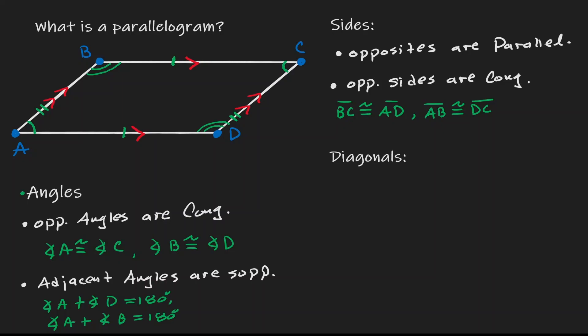Now let's take a look at the diagonals of this parallelogram. If we connect point A to point C, that is classified as a diagonal of this parallelogram, and the same goes if I connect point B to D — that's another diagonal. Notice that these diagonals intersect at a point, so let's call this point F. The property that diagonals have within a parallelogram is that diagonals bisect each other.